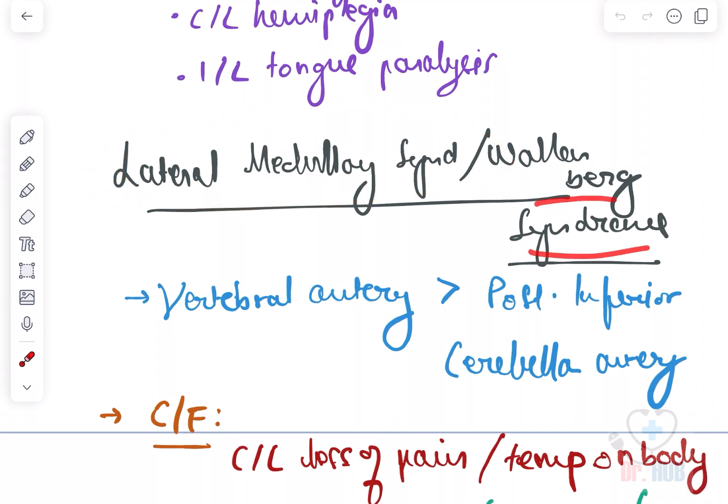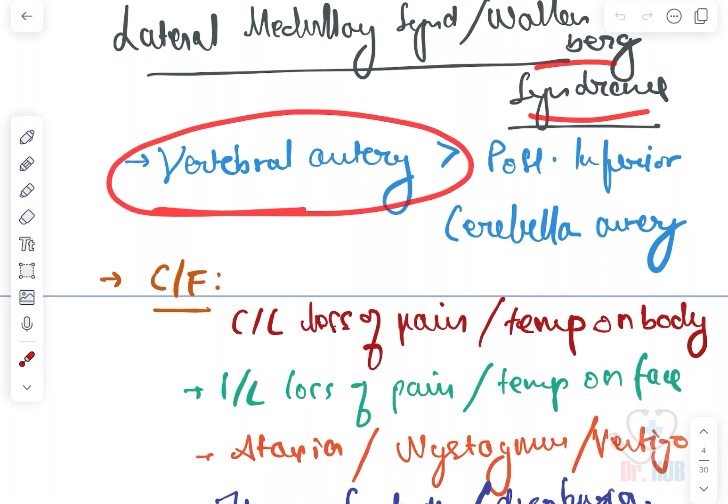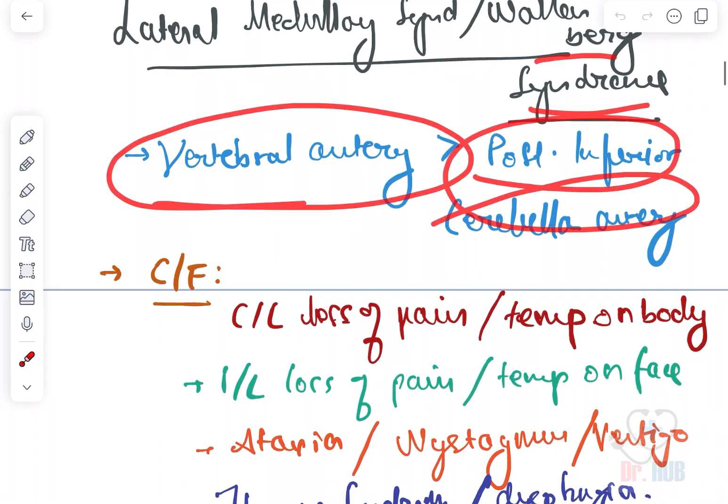Moving on to the lateral medullary syndrome or Wallenberg syndrome. This involves the vertebral artery greater than the posterior inferior cerebellar artery.